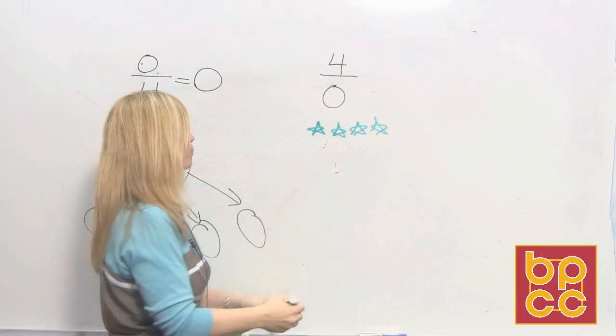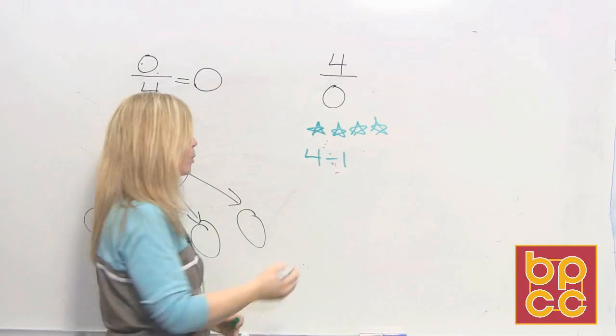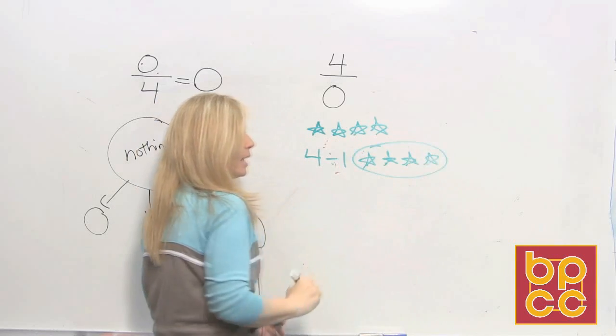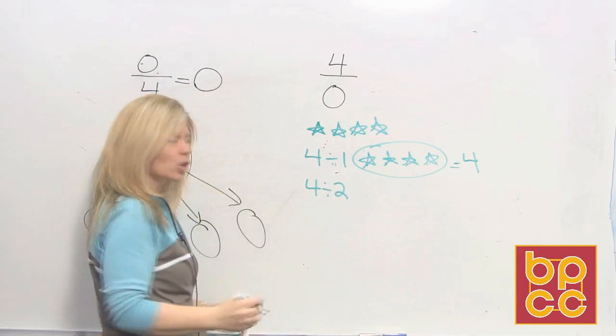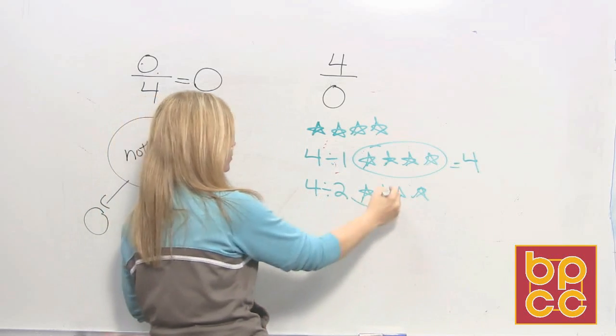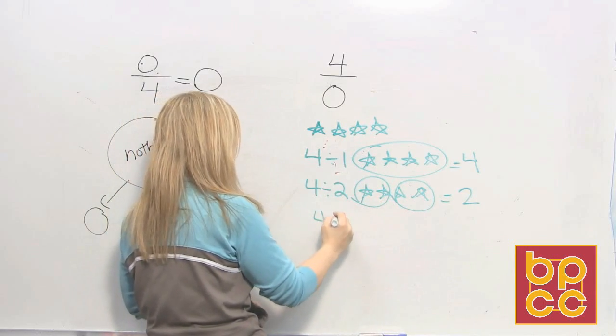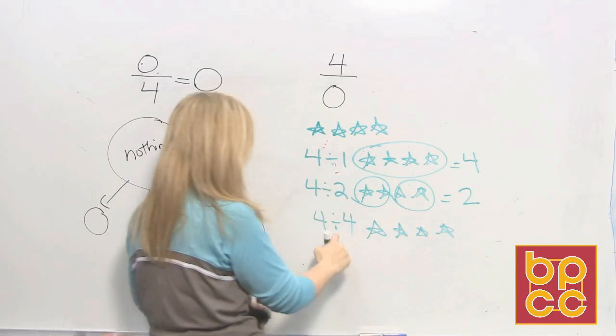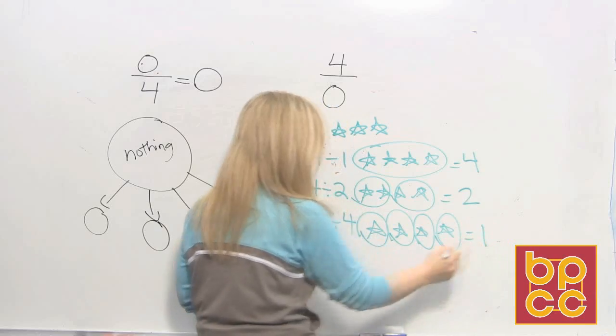Well let's take a moment and review. What happens if I said 4 divided by 1? Can we do that? Sure we can. We could take 4 stars and divide them into 1 group. And in that 1 group there would be 4. Can I do 4 divided by 2? Sure I can. I could take the same 4 stars and divide them into 2 groups. And each group would get 2. Can I take 4 stars and divide it by 4? Sure I can. I could have 4 stars and I could say divide them into 4 separate groups. 1 group, 2 groups, 3 groups, 4 groups. And each would get 1.